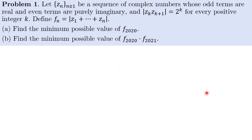So for problem 1, we have the following question. Let Zn be a sequence of complex numbers whose odd terms are real and even terms are purely imaginary.